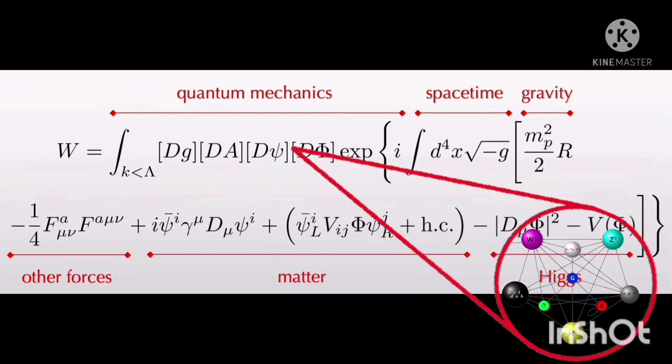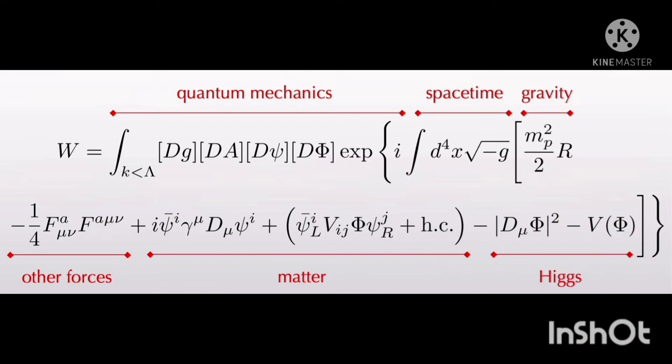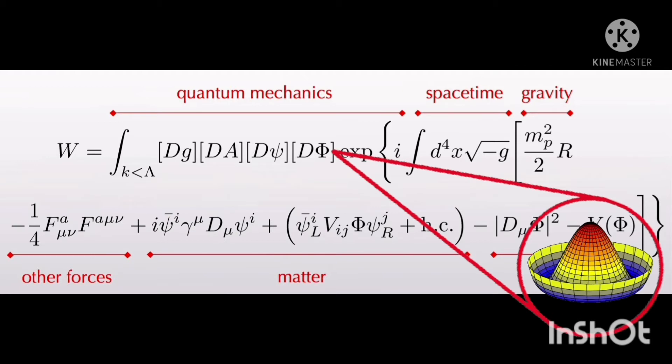The Greek letter psi in D psi represents fermions such as leptons and quarks. The Greek letter phi in D phi represents the Higgs field which gives mass to phi via spontaneous symmetry breaking.